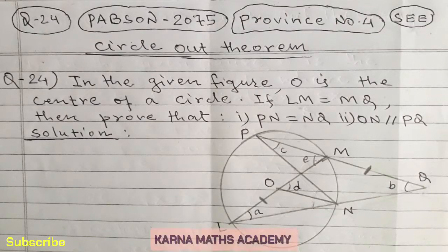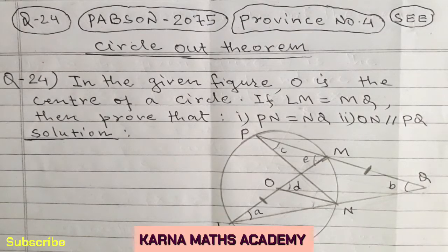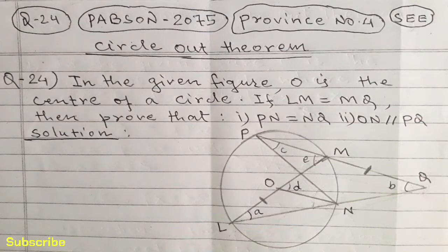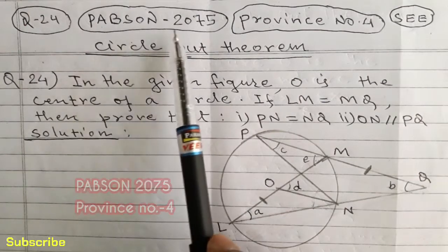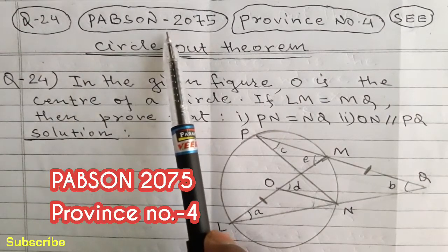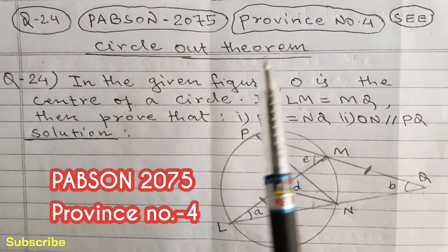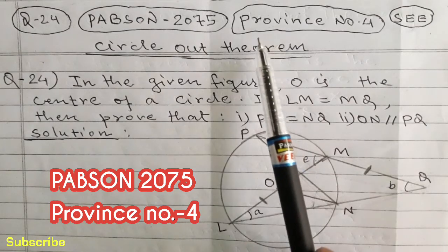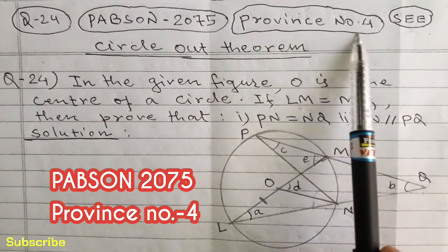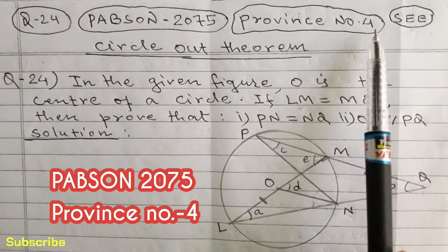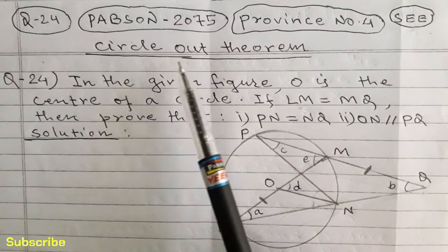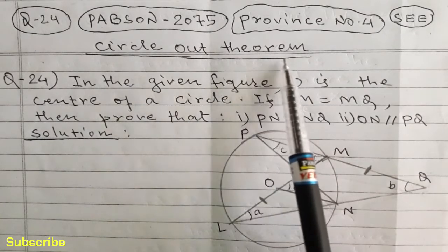Hello dear students, welcome to Karna Massey Academy. Today in this video we are going to discuss one of the most important questions which has been asked in Pabson examination board 2075, province number four. This question is from the circle theorem.